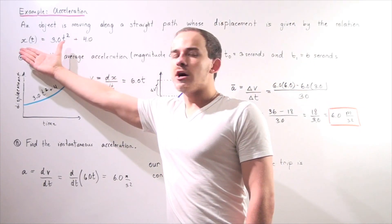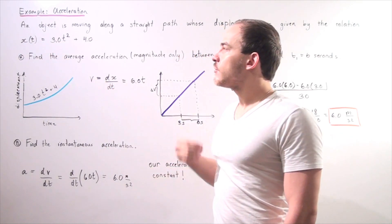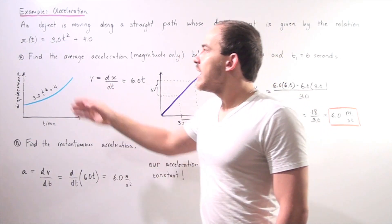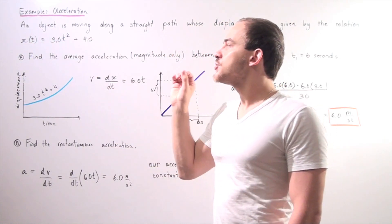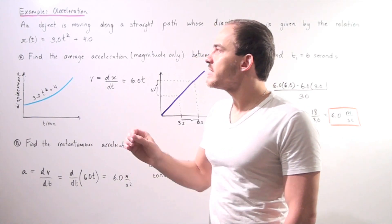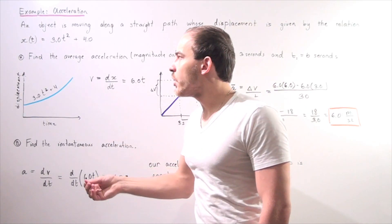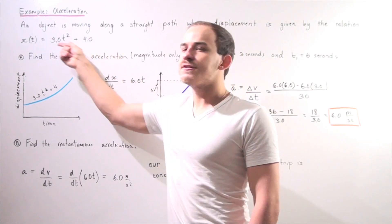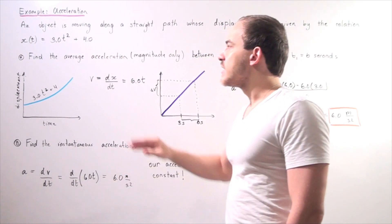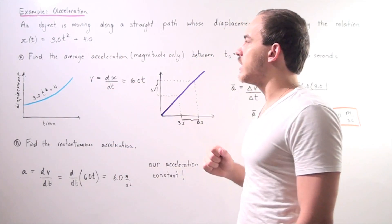In other words, what this function tells us is that for any given time, this function spits out a certain displacement. So at time equals zero, we know our displacement is four meters. Now, let's find part A and then move on to part B.